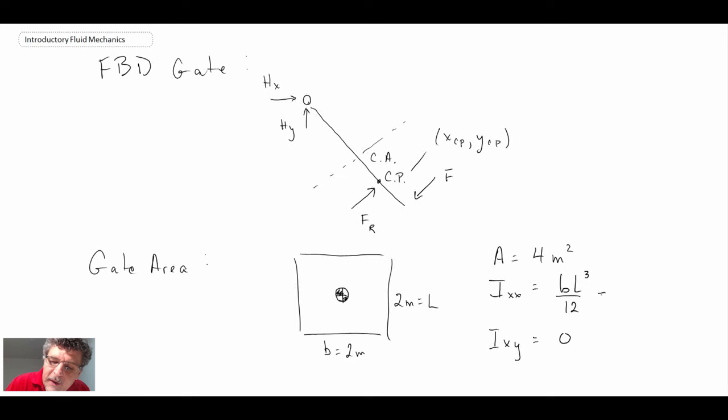And IXY in this case is zero because it is symmetric. But what we'll do, we'll plug in the values for IXX. And when we do that, we get four over three. And the units of that are going to be meters to the fourth. So we'll carry that through in our calculation when we're looking for XCP and YCP.